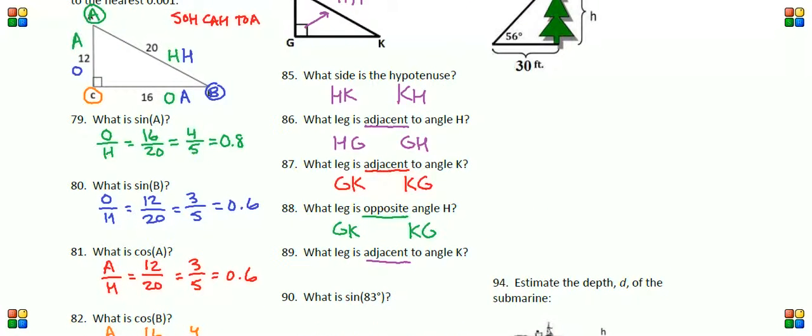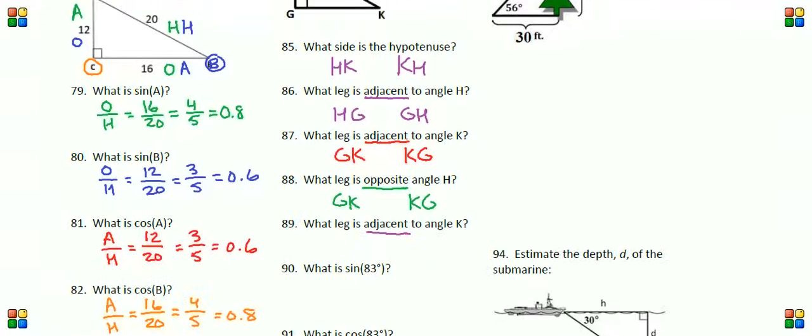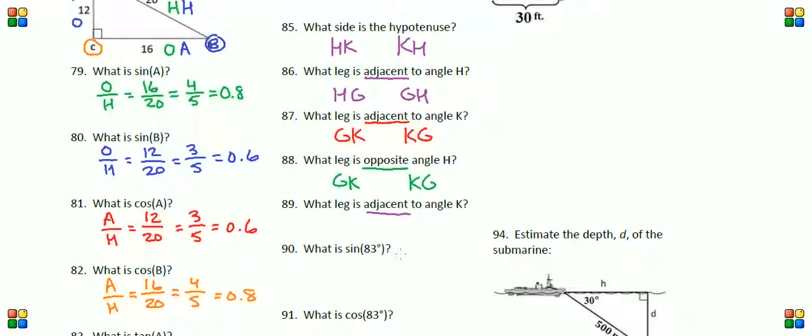Which leg is adjacent to angle K? Let's take a look at angle K. The adjacent leg to angle K is next to angle K or touching angle K, and that's GK. Actually, I just noticed there's a typo here, class. I was wondering why I was getting the same answer. Number 87 is the exact same question: what leg is adjacent to angle K? 89: what leg is adjacent to angle K? Probably they meant to write which leg is opposite to angle K.